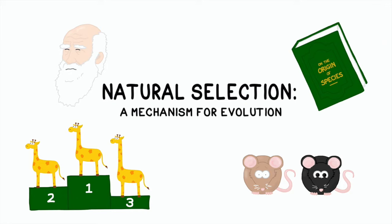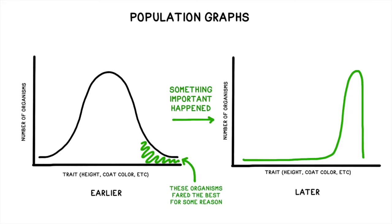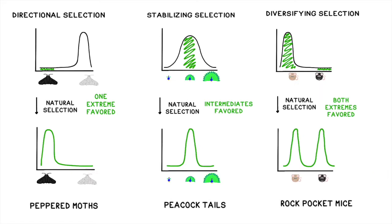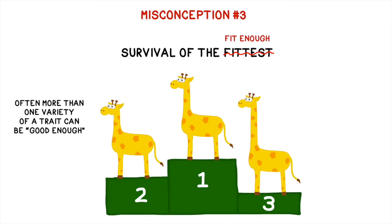Welcome back to BOGO Biology. This video will discuss natural selection as a mechanism for evolution. We'll be discussing what natural selection is, specific examples of directional, stabilizing, and disruptive selection, and a few common misconceptions.